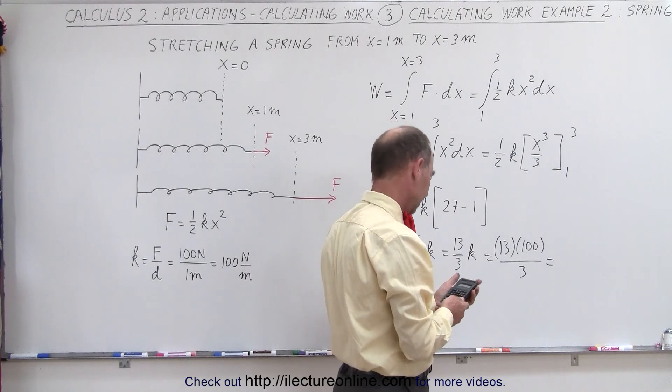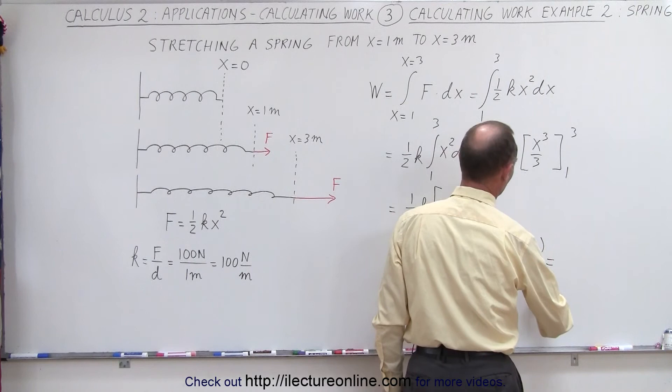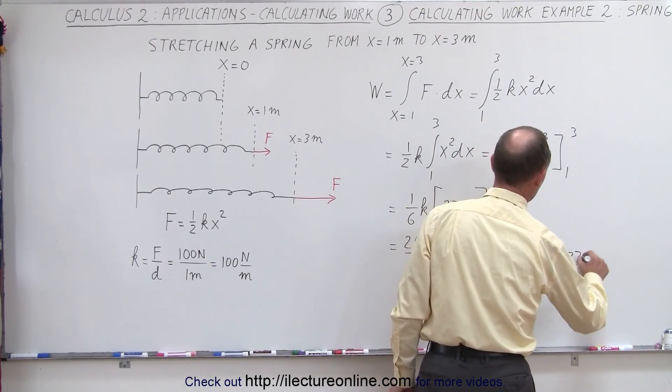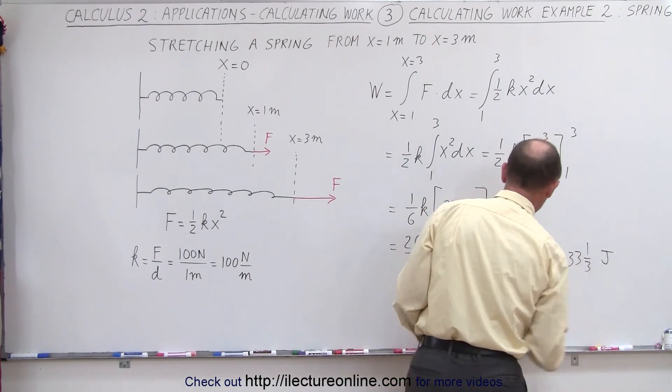Well, let's see here. Actually, we don't need a calculator for that. 1200 divided by 3 is 400. That would be 433 and a third. And the work done, that would be in terms of joules.